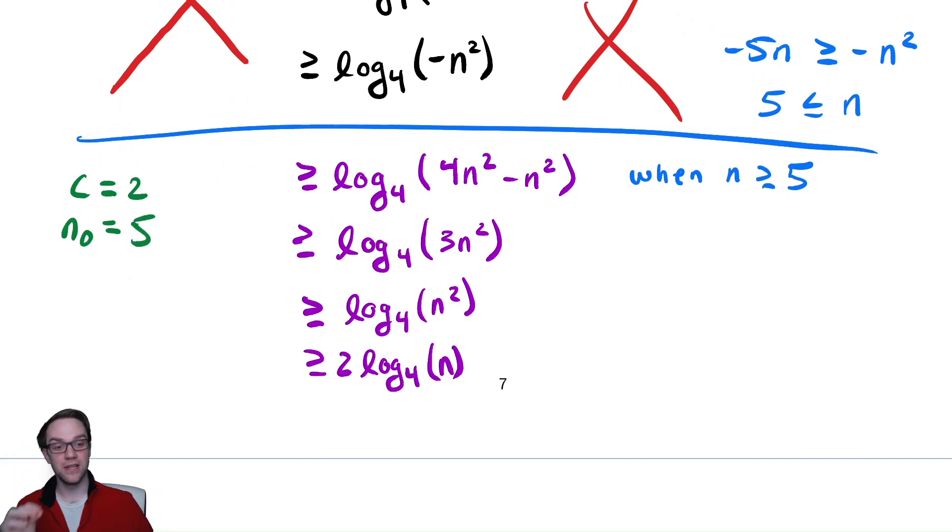And, this technique for dealing with negative values should always work. You can always replace a lower order term with a higher order term that is a smaller constant. Any smaller constant. This choice of negative n² was completely arbitrary. I could have done any value out front of this n². I could have written 3, and it would have worked. I could have written 4 thirds, and it could have worked. I could have written π over e, and it would have worked. Any choice that is less than 4 would have worked.